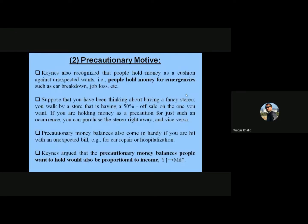Keynes presented another important motive for holding money: the precautionary motive. Keynes recognized that people hold money as a cushion against unexpected wants — for emergencies such as a car breakdown or job loss. For example, suppose you have been thinking about buying a fancy stereo, and you walk by a store having a 50% off sale. If you are holding money as a precaution for just such an occurrence, you can purchase the stereo, and vice versa.